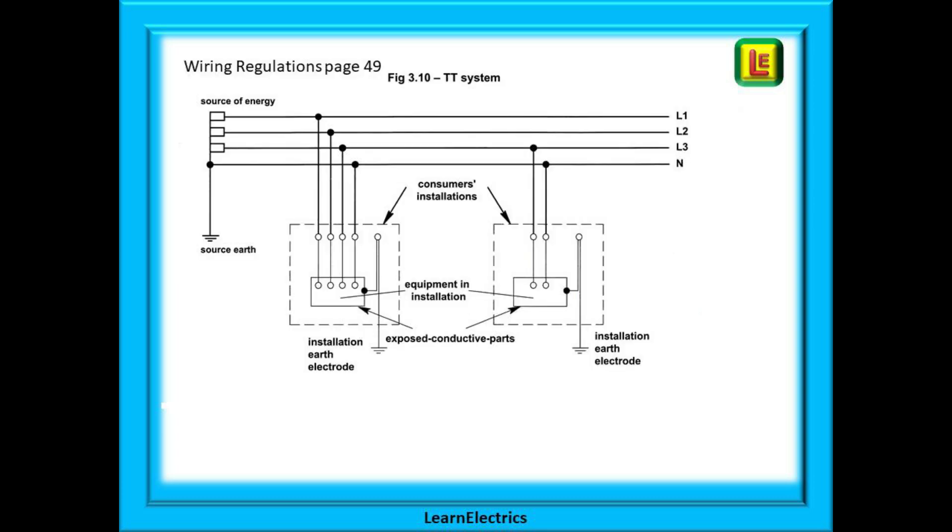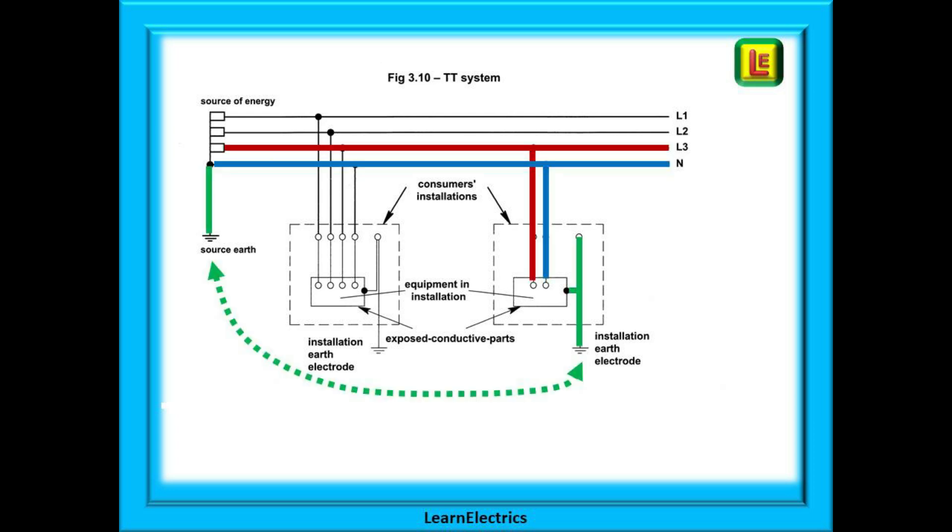On page 49 we see the TT system. Phase and neutral go to the intake position. But the earth does not. At the supply transformer there is an earth rod. At the intake position there is also an earth rod. There is no copper conductor between them. They rely on a connection through the soil.